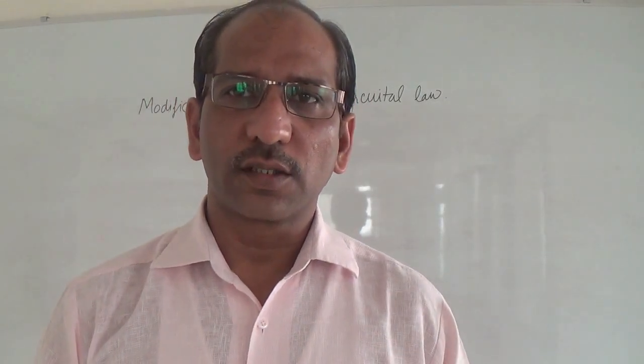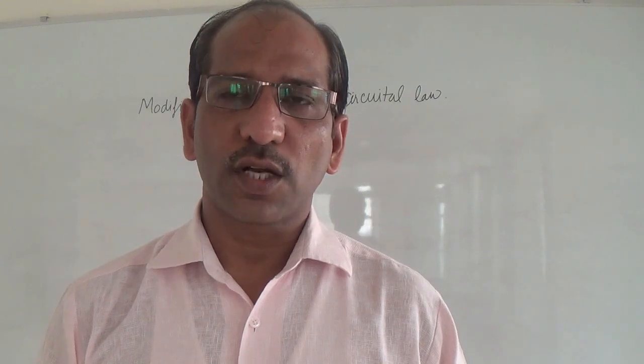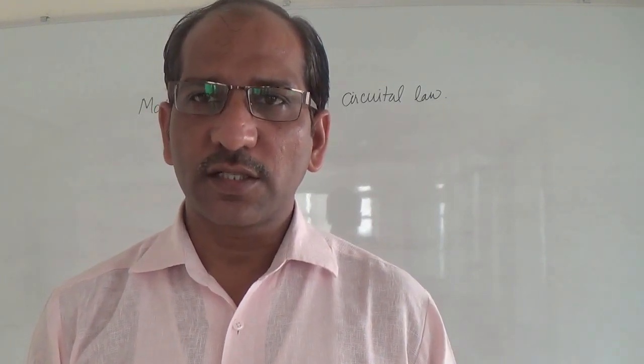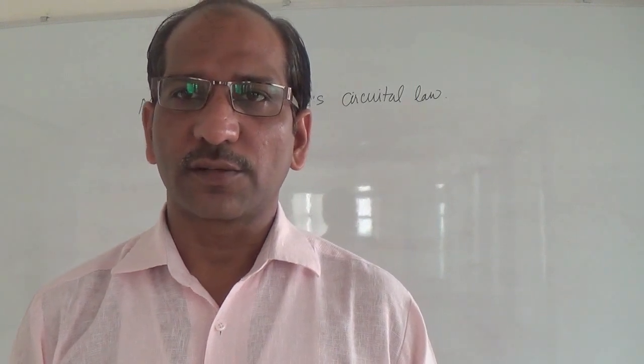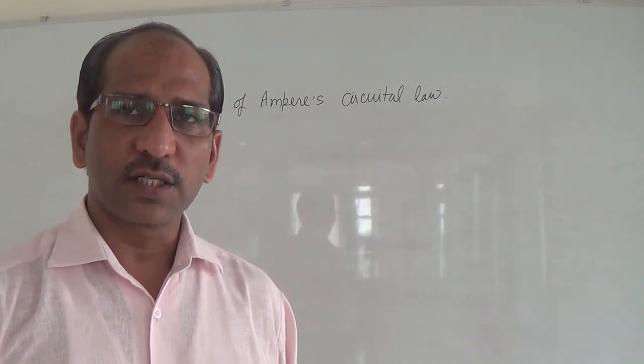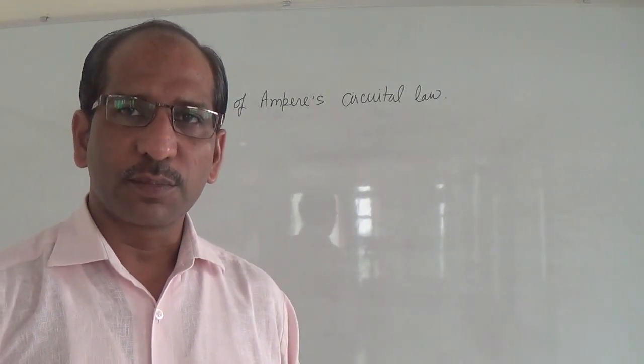In earlier lectures we have seen how one can convert the integral equation of Gauss law in electrostatics, Gauss law in magnetism, Faraday's law, and Ampere's law. The combined form of these four equations is known as Maxwell's equations in electrodynamics. In this particular section of the video we will see the inconsistency in Ampere's law — what that inconsistency is and how one can derive the result for it.